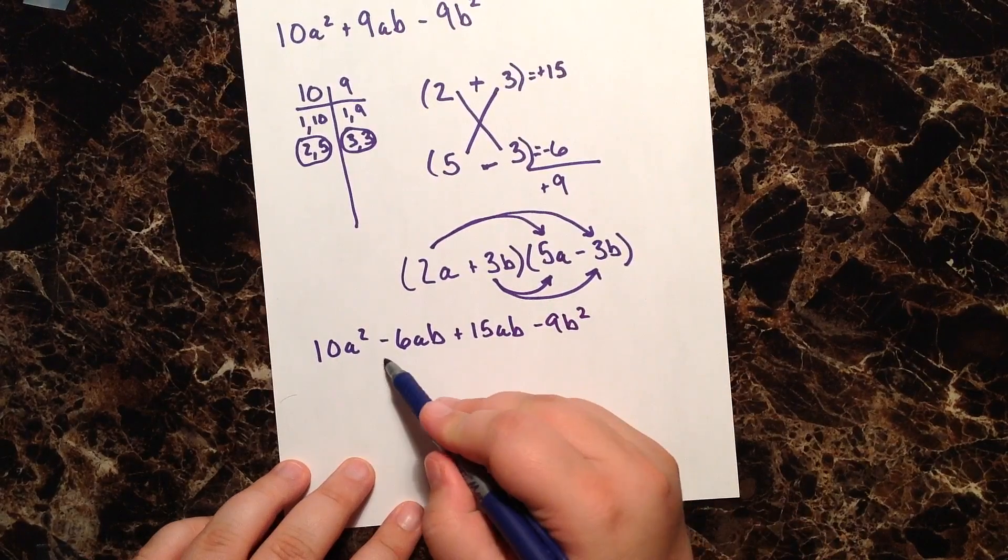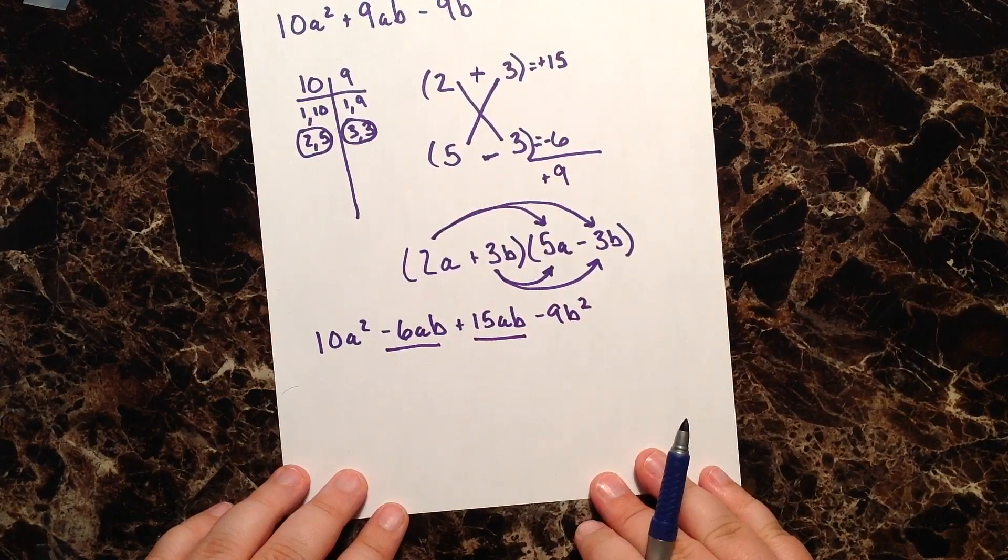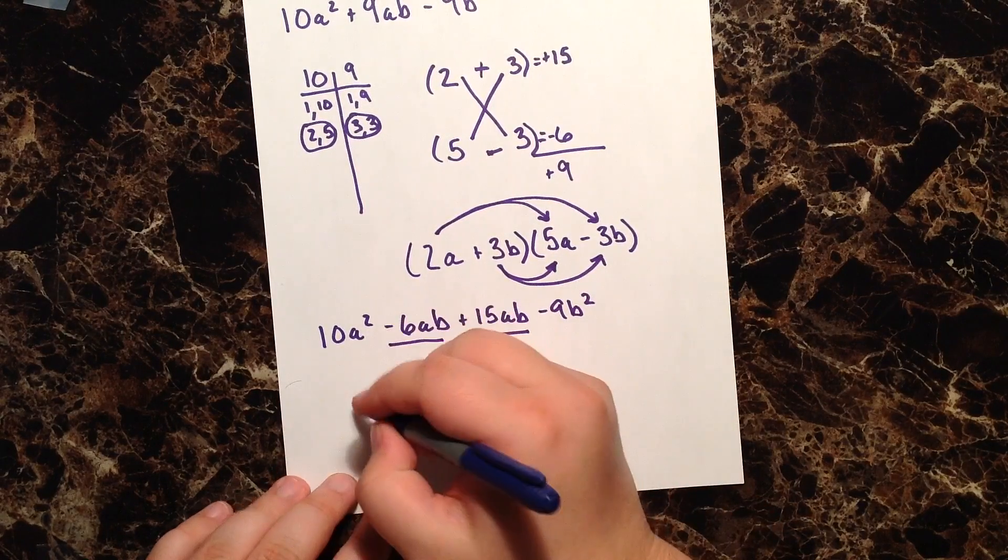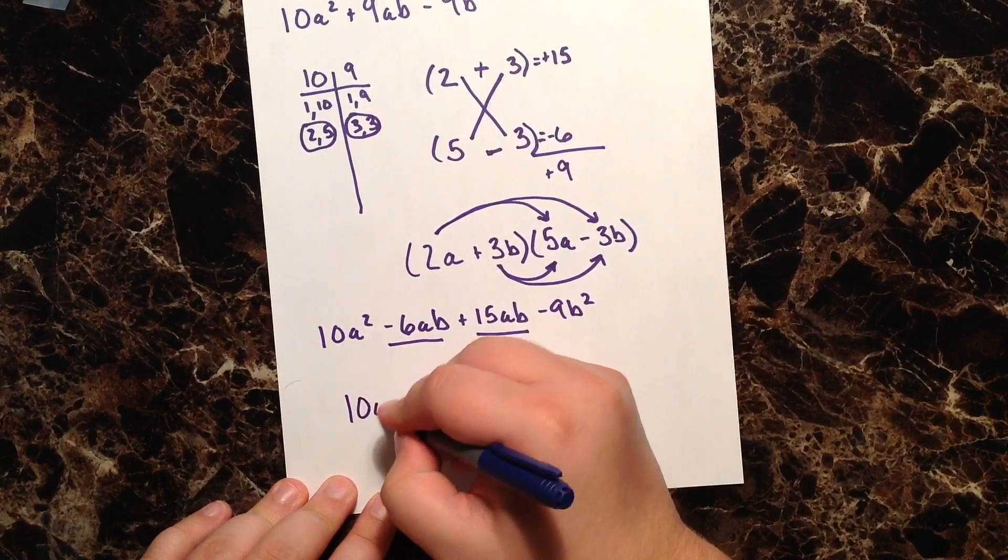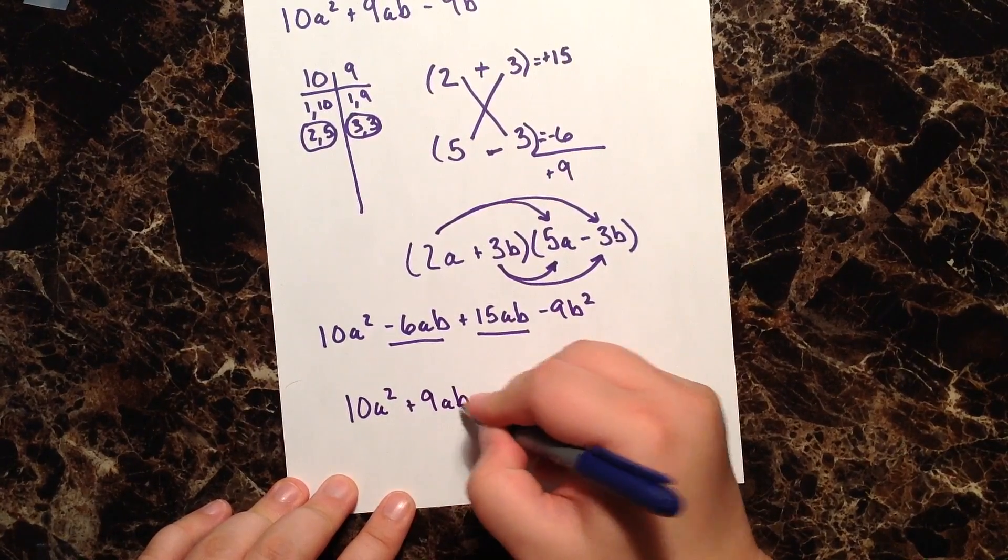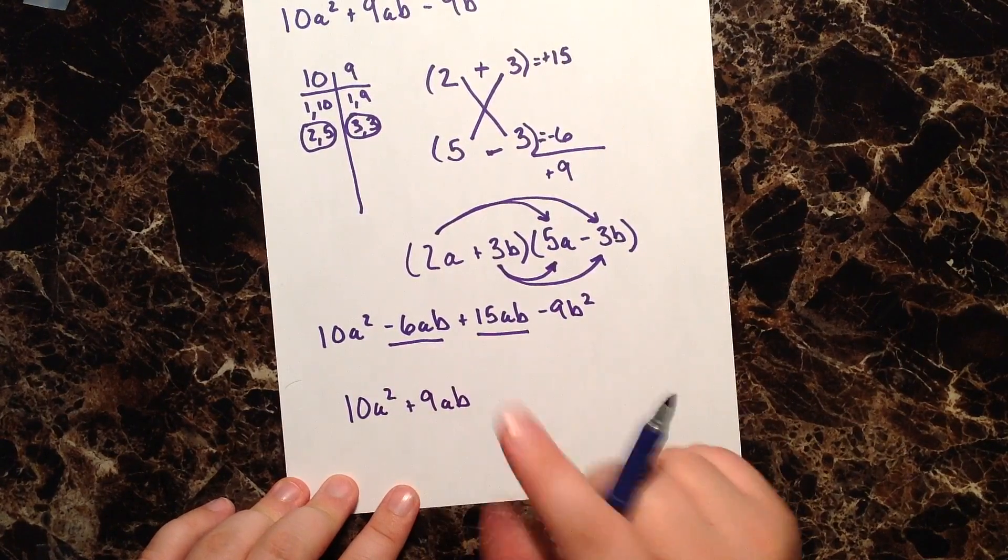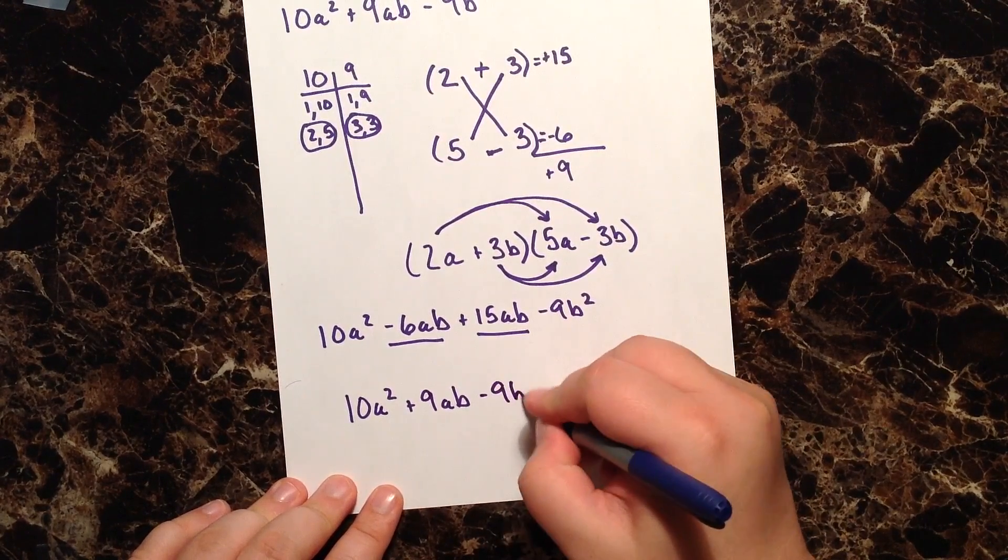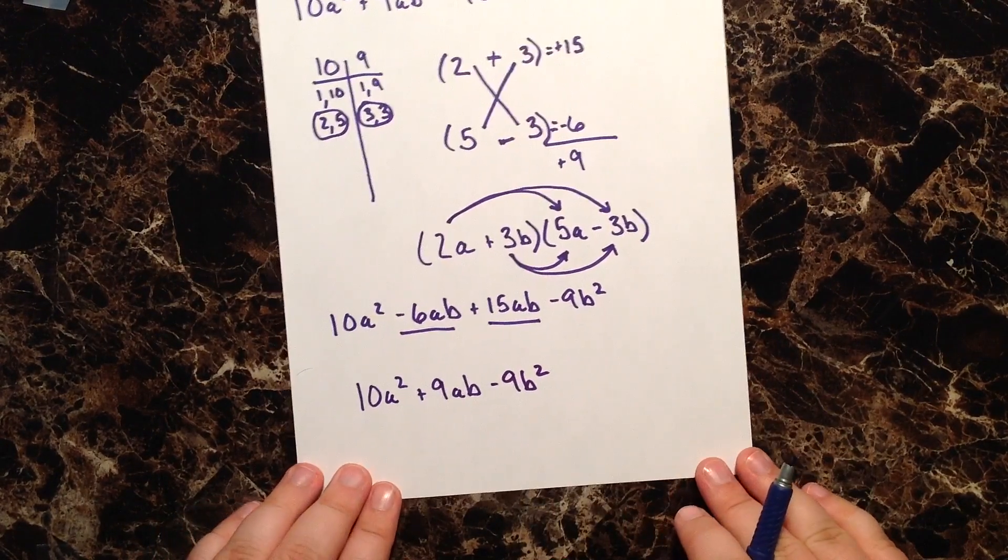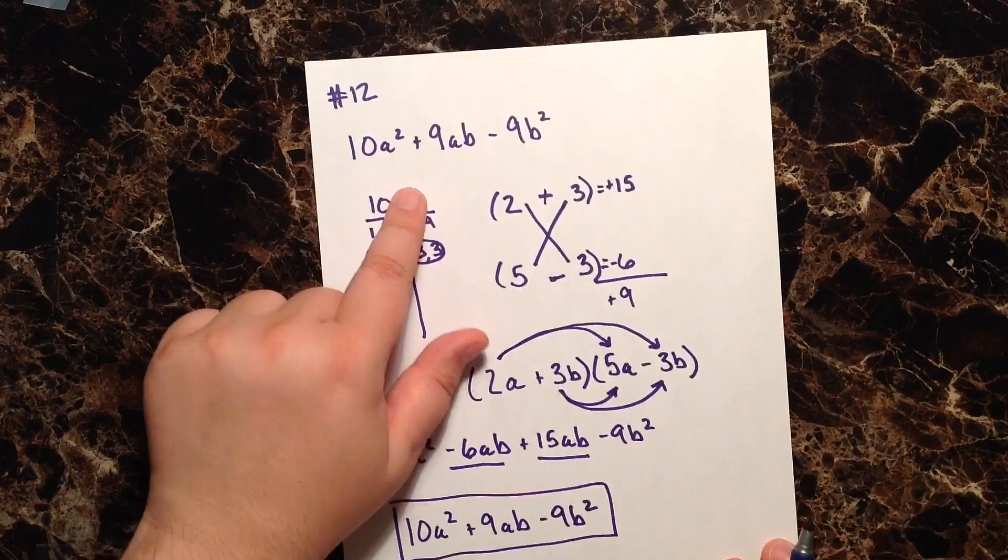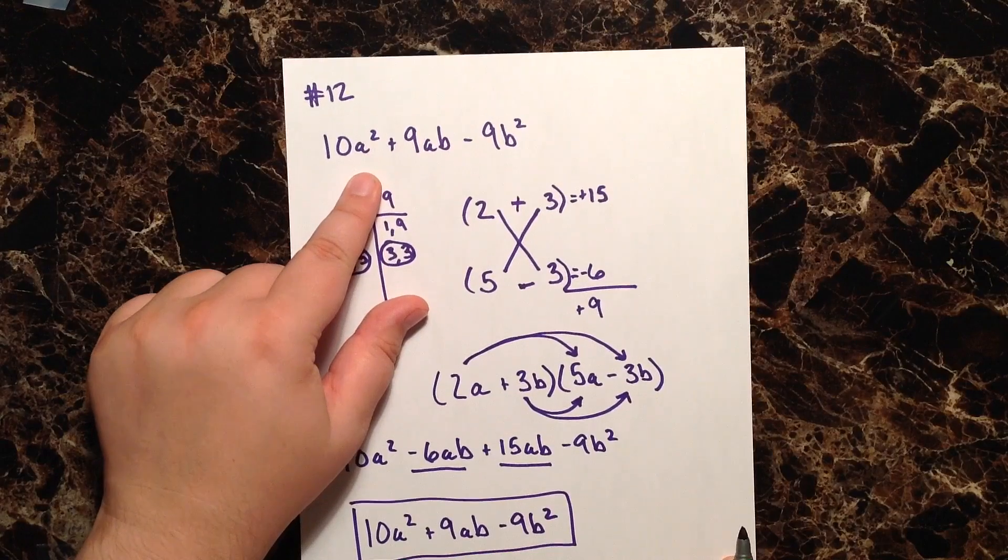And now I see that I have like terms. So let's go ahead and simplify and combine these. And when we do, we get 10a² + 9ab. Negative 6 plus 15 is positive 9. And then lastly, minus 9b². And this is exactly the same as the original trinomial we started with.